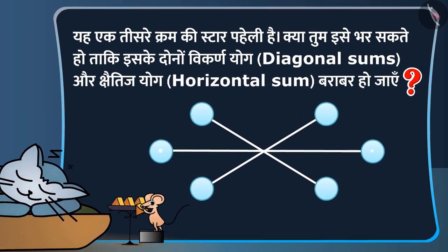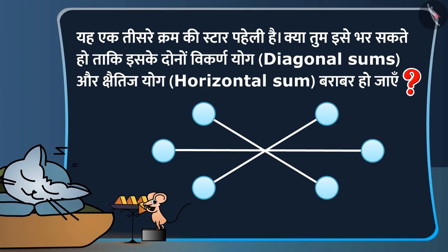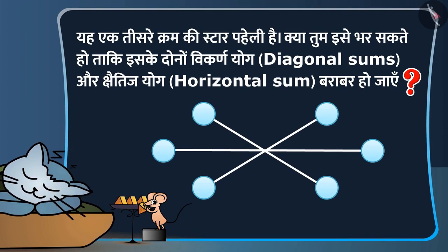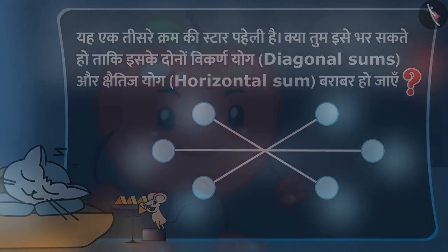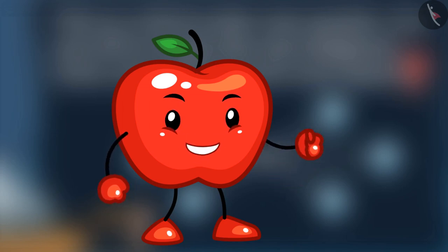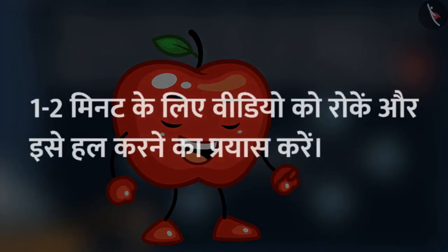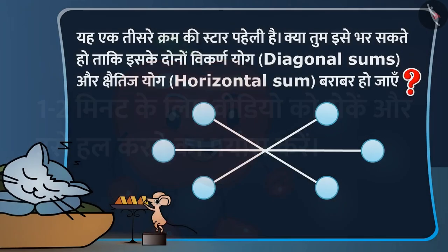ताकि इसके दोनों विकर्ण योग यानि डाइगनल सम्स और क्षैतिज योग यानि होरिजॉंटल सम्स बराबर हो जाएं? बच्चों, मुझे यकीन है कि फ्रूटी की तरह आप भी इस पहेली को हल कर सकते हैं। तो अब आप इस वीडियो को रोक सकते हैं और इस पहेली को हल करने का प्रयास कर सकते हैं।